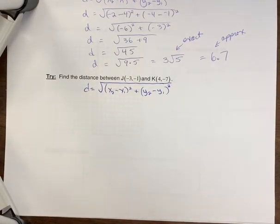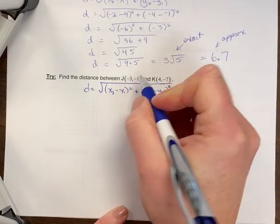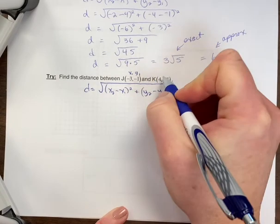Alright, let's look at the final example here that you would have tried on your own. So we've got our points here, negative three, negative one - I'm going to call this x₁, y₁. And the second point I'm going to call x₂, y₂.